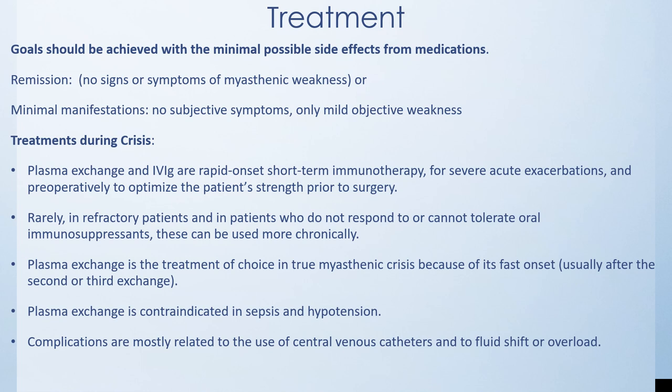Treatment goals for myasthenia gravis should be achieved with minimal medication side effects. Goals include complete remission — no signs or symptoms of myasthenic weakness — or minimal manifestations with no subjective symptoms and only mild objective weakness. During crises, plasma exchange and IVIG are rapid-onset, short-term immunotherapies for severe acute exacerbations, also given pre-operatively to optimize strength. Plasma exchange is the treatment of choice for true myasthenic crisis due to its fast onset, typically showing benefit after the second or third exchange, but is contraindicated in sepsis and severe hypotension. Complications are mostly related to central venous catheters or fluid management.